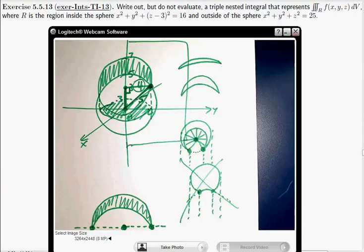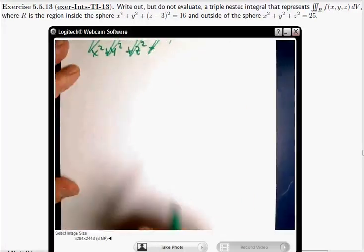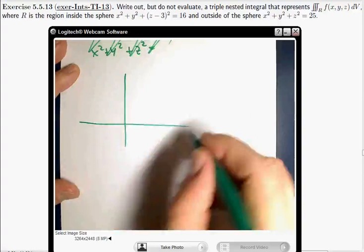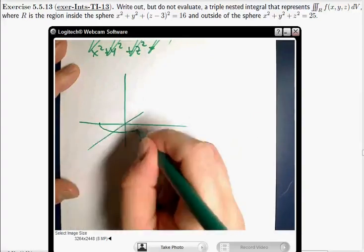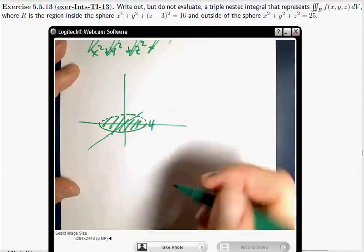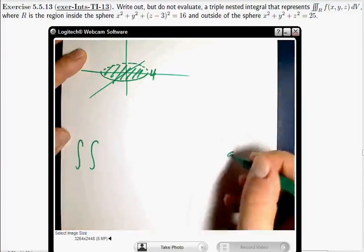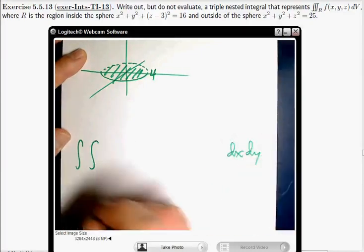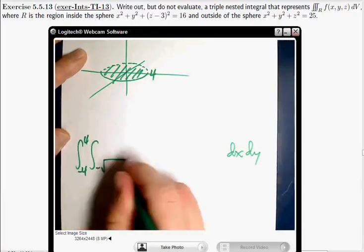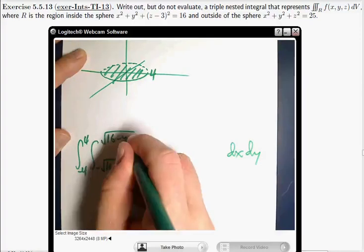Is that cool? Everybody good? Okay. So, yeah, didn't need to do that at all. So, looking at that projection, radius 4, that's into the XY plane. So, my bounds, I'm going to do the dx and the dy on the outside, negative 4 to 4, negative square root of 16 minus y squared, positive square root of 16 minus y squared.